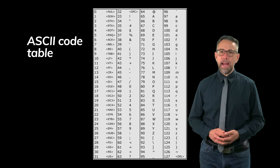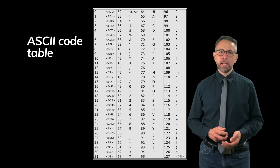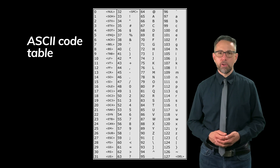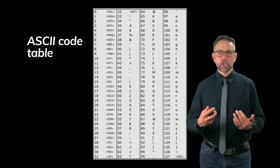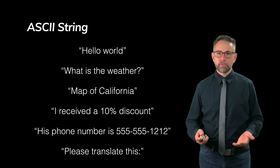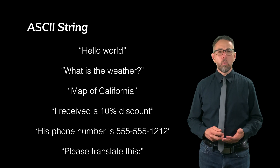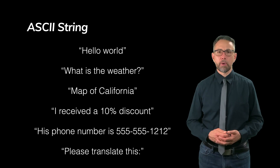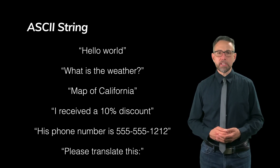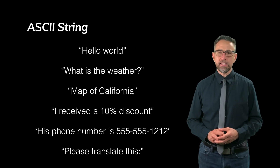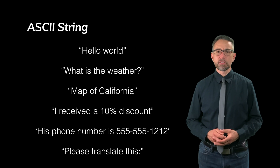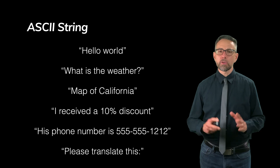Here's an example of the ASCII code table, where you take the decimal number on the left and translate it to the ASCII character on the right. For example, decimal 85 translates to capital letter U. Valid ASCII strings include 'hello world,' 'what is the weather,' 'map of California,' 'I received a 10% discount' — percent is representable — '555-555-1234' with digits and dashes, and 'please translate this:' with a colon. Those are all valid ASCII strings.